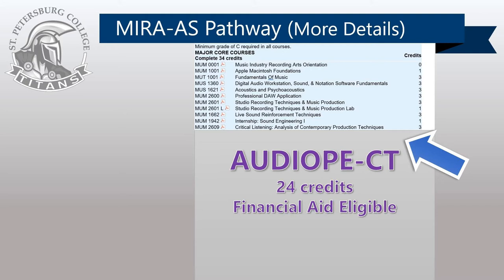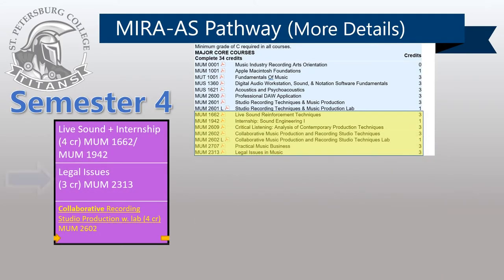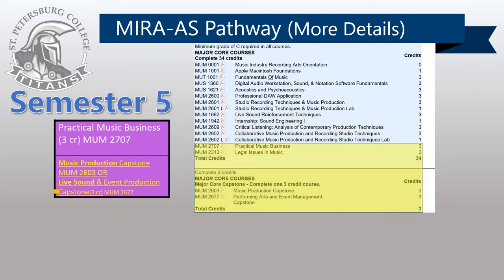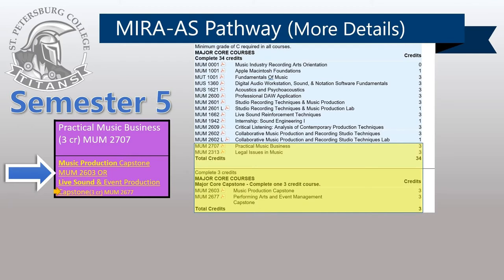All MIRA AS degree students earn the certificate at this point as an Embedded Certificate Achievement. This semester also includes MUS-2313 Legal Issues in Music, and MUS-2602/MUM-2602L Collaborative Music Production and Recording Studio Techniques. Semester 5 Core consists of MUS-2707 Practical Music Business, and a choice of either MUS-2603 Music Production Capstone, or MUS-2677 Performance Arts and Event Management Capstone.